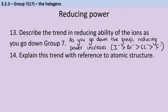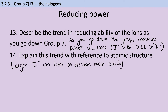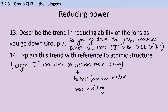This comes down to the size of the atoms, the number of shells, and the forces being experienced. The iodide ion is the largest of those four, meaning it can lose an outer shell electron more easily. That electron is further from the nucleus and therefore experiences less electrostatic attraction, and the electrostatic attraction it does experience is better shielded by those inner shells.